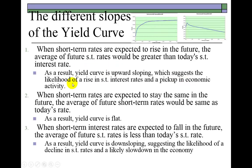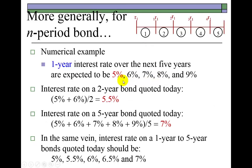An upward sloping yield curve suggests a likelihood of rising short-term interest rates and therefore a pickup in economic activity. The reason we're expecting short-term interest rates to rise is because we're expecting economic activity to rise — the Fed would raise its target for short-term interest rates if it expects a pickup in economic activity, as a way to contain inflation.